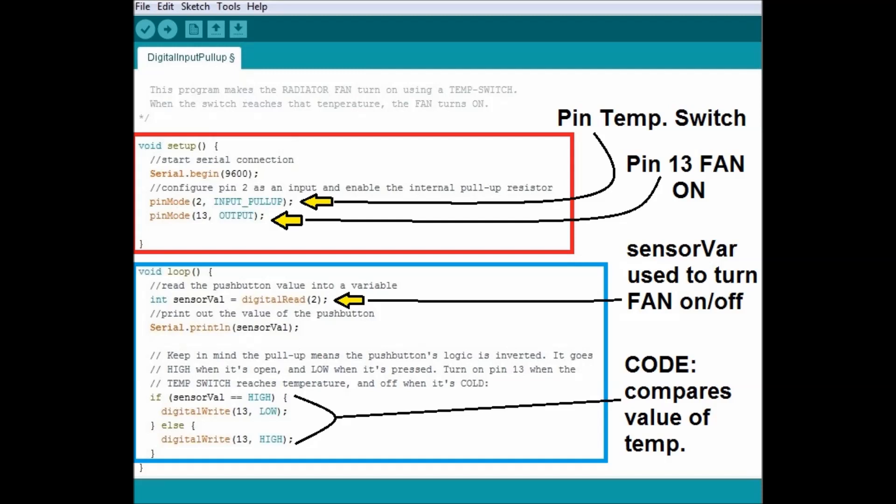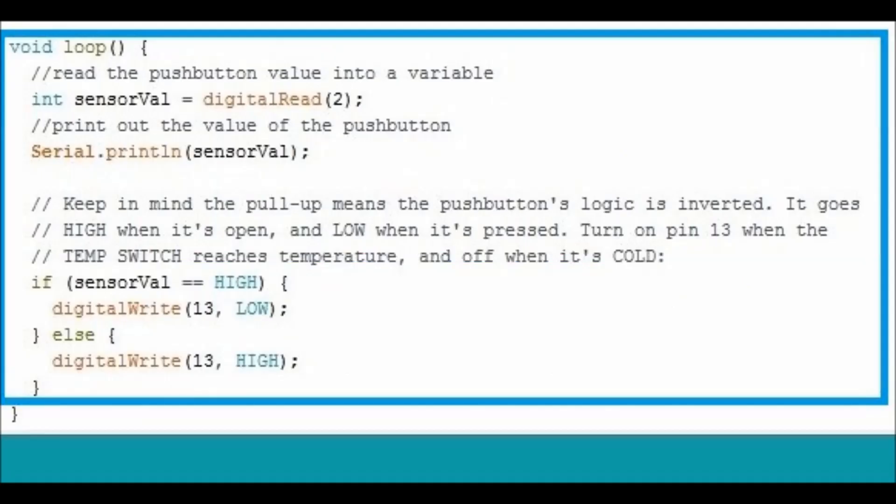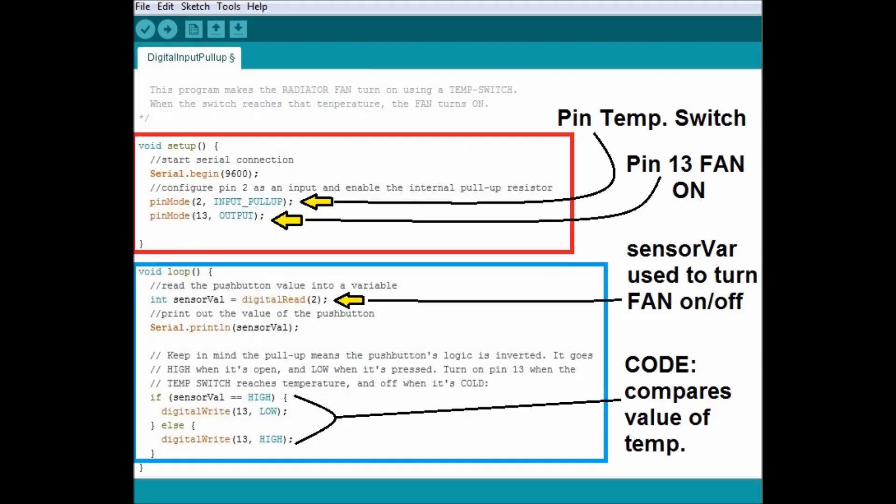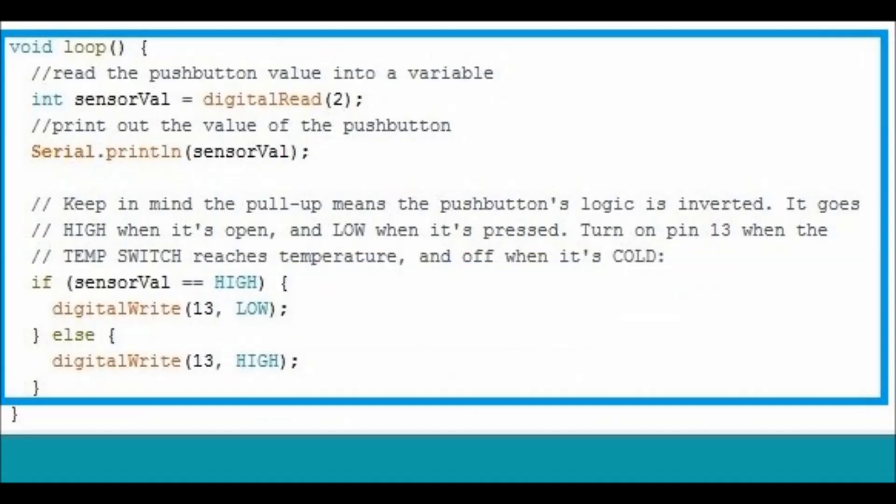Later on in the loop part, which is the one that keeps repeating itself, as you can see, sensor var, that stands for variable. So the sensor variable is the one that's going to be used to turn the fan on and off. That's the one that's going to be compared further down where it says code. We put a little loop bracket in there so that it says if sensor value is high, then turn the fan on, high or low.